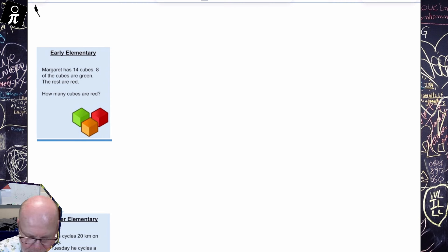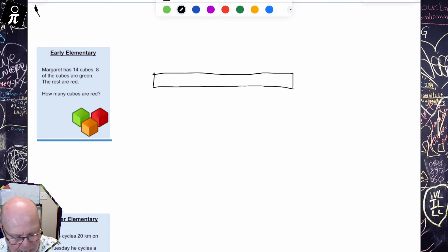So let's get started and we're gonna start with the early elementary. Margaret has 14 cubes. Eight of the cubes are green. The rest are red. How many are red? So what we're gonna do is we're gonna start by drawing a classic tape right there. And then we're gonna keep going back and forth reading the question and editing the tape diagram model. It says Margaret has 14 cubes.